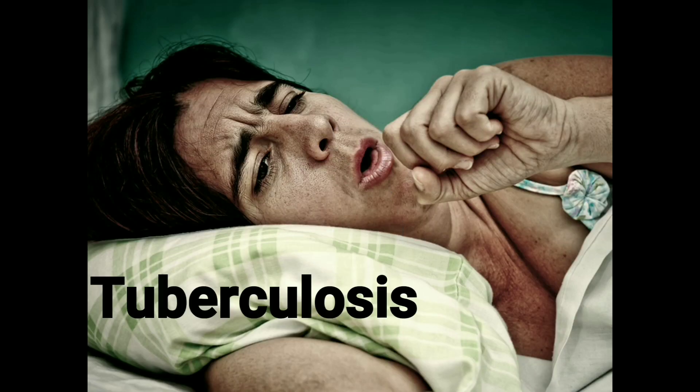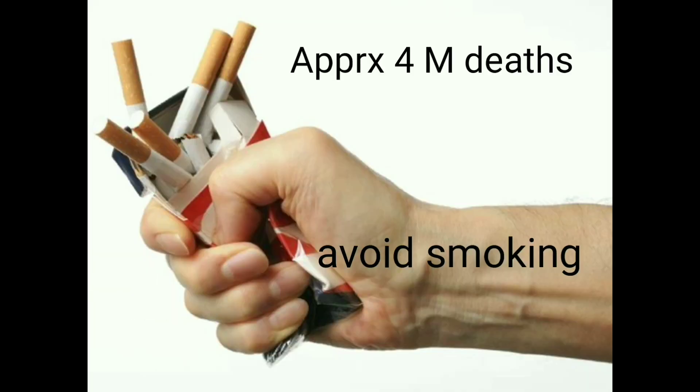Number 3: Tuberculosis. Tuberculosis is caused by the bacterium Mycobacterium tuberculosis. It can be avoided by avoiding smoking, and up to 2015 it caused approximately 4 million deaths.